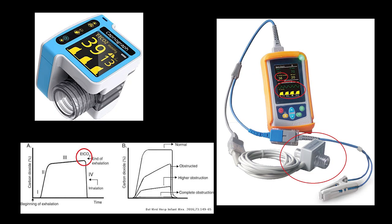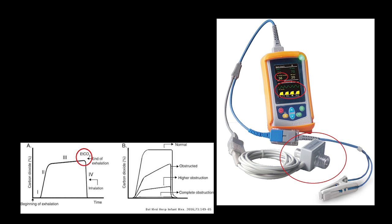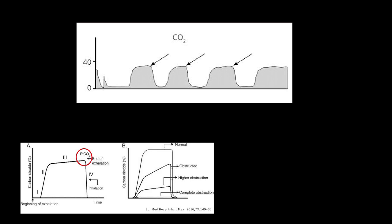End-tidal capnography measures continuous trends in CO2 exhaled by the patient with each and every breath. The capnograph charts the waveform of each breath. As the patient exhales, the wave starts an upward spike, and at the very peak of the exhalation is the end-tidal measurement of CO2, measured in millimeters of mercury. Then, immediately after that, the wave takes a downward stroke as the patient inhales, and the cycle starts all over again.